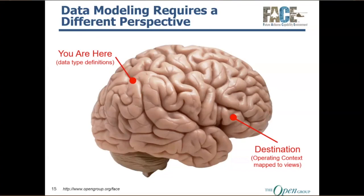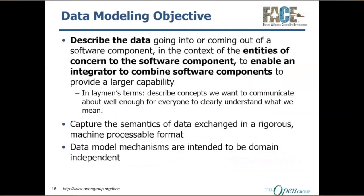What are we trying to accomplish with data modeling? The goal is to describe the data going into or coming out of the software component in the context of the entities of concern, to enable an integrator to combine software components to provide bigger capability. In simpler language: we're just trying to describe what we want to communicate to and from our software — well enough that everybody understands what we mean, so it's easy to put the parts together.